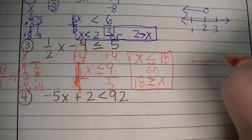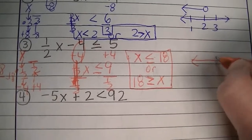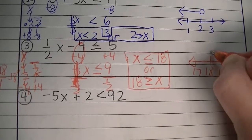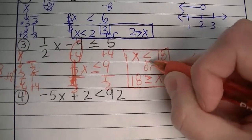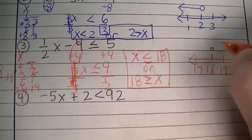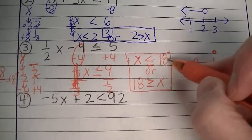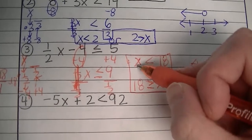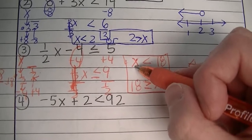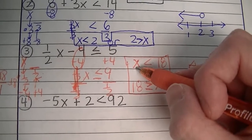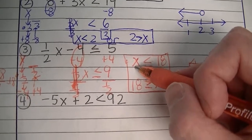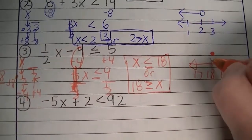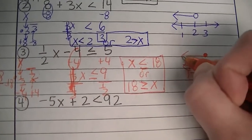Now for the number line — put that 18 on there. It's going to be a closed circle because x is less than or equal to 18, so 18 is a possible value. Numbers smaller than 18 that x could be are like 17, 16, 15, 13, negative 22, negative 4, 0 — and all those numbers are to the left.